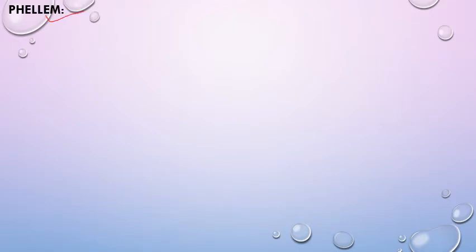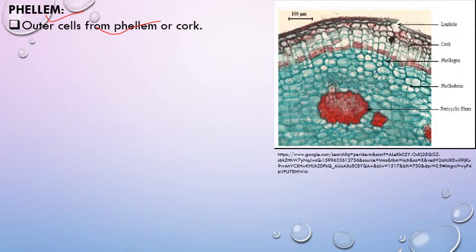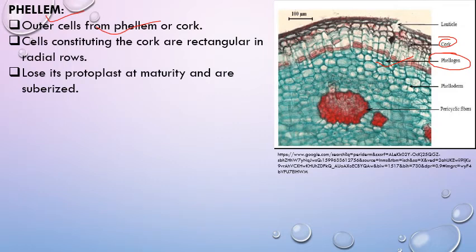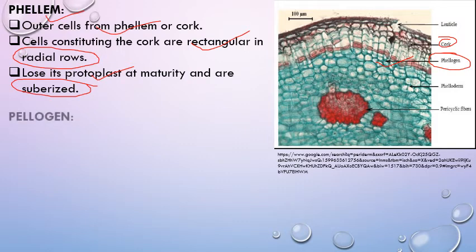Phellem are the cork cells formed towards the outer side of cork cambium. These cells constitute the cork and are rectangular in radial rows. They lose their protoplast and become dead at maturity due to deposition of suberin in their cell walls. Their main function is to provide protection from the external environment.